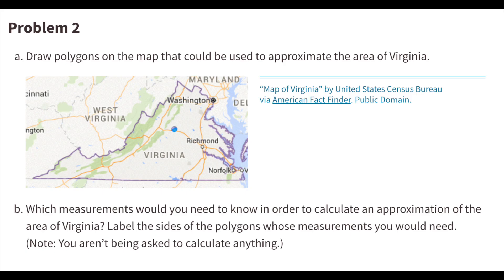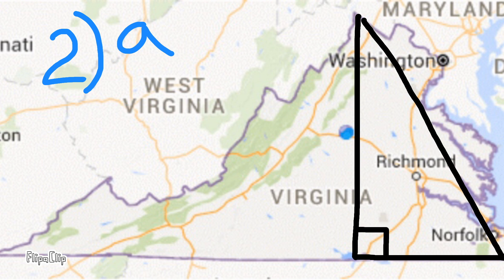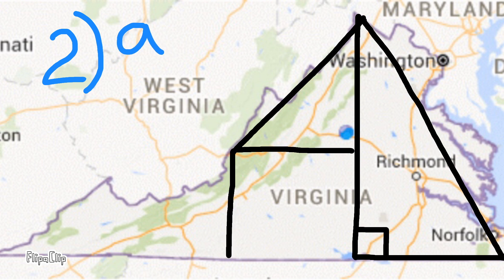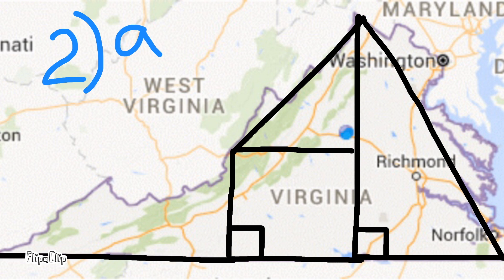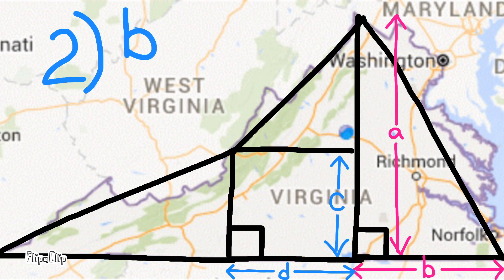Number two: (a) Draw polygons on the map that could be used to approximate the area of Virginia. (b) Which measurements would you need to know in order to calculate an approximation of the area of Virginia? Label the sides of the polygons whose measurements you would need. Note: you aren't being asked to calculate anything. Let's draw the polygons on the map. To answer 2b, we would need the base and the height for each of these polygons.